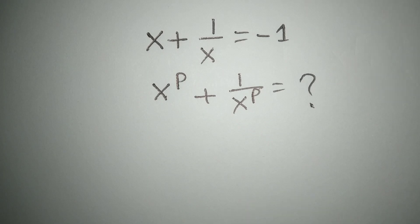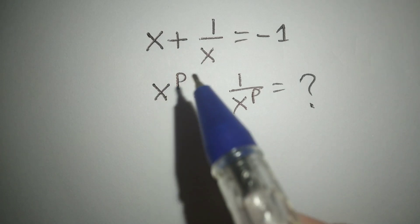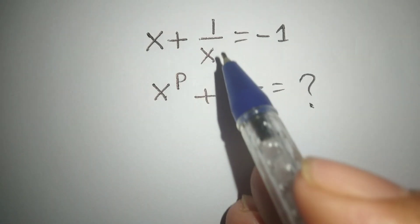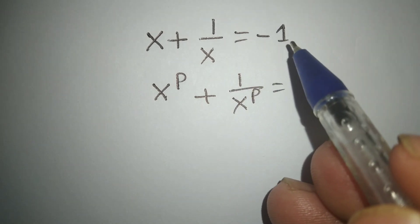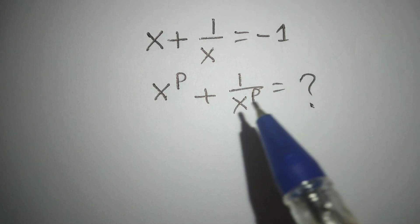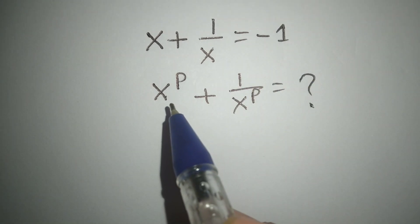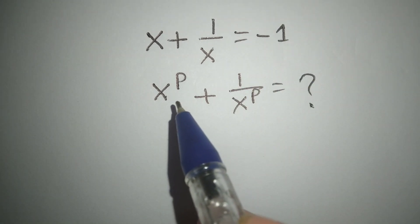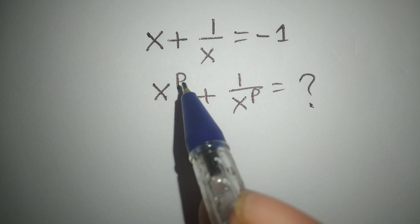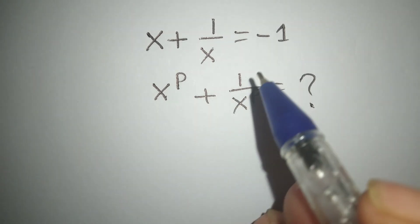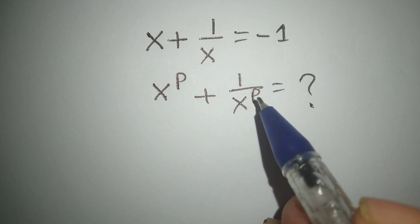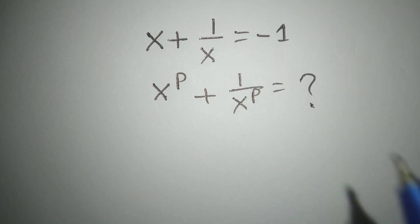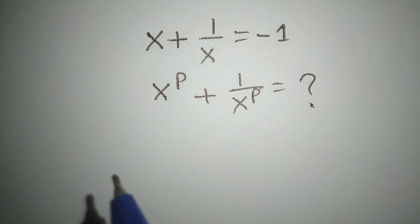Hi, this is a nice math problem. x plus 1 over x is equal to minus 1, and we have to find the value of x to the power p plus 1 over x to the power p. So let's start.